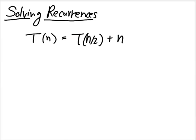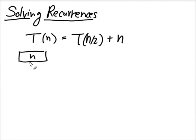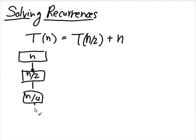Let's talk about how to solve recurrences. We learned one technique: the recursion-tree method. So let's try to use that technique to solve this one. In this problem, the topmost node has input size n, and then you divide it into just one subproblem of size n over 2. From that you get n over 4, and you keep doing that until you get to 1.